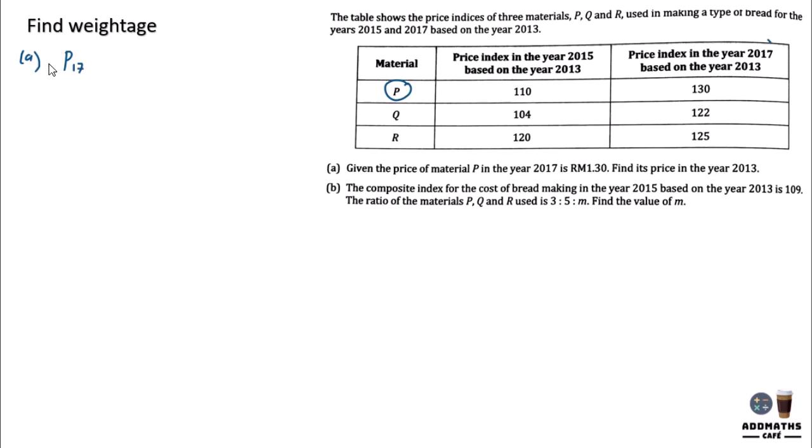So you are looking at this part, 2017 and 2013. So I17/I13 for P times 100 will give you 130. So 1.3, you are finding I13 times 100 equals 130.